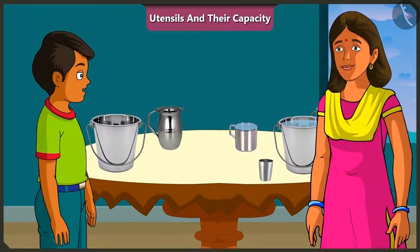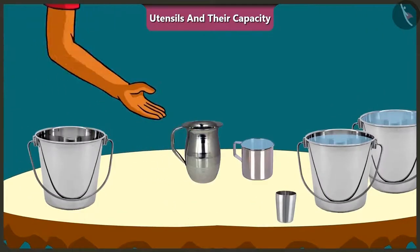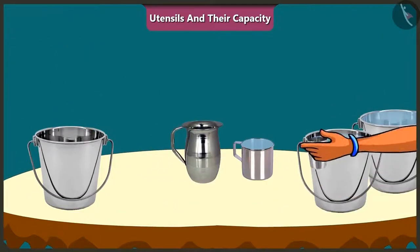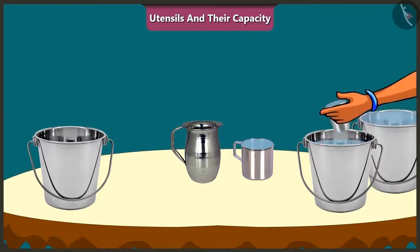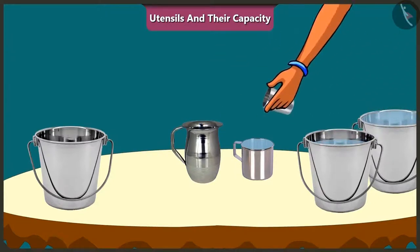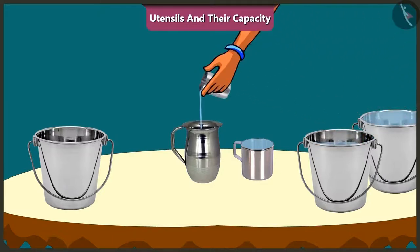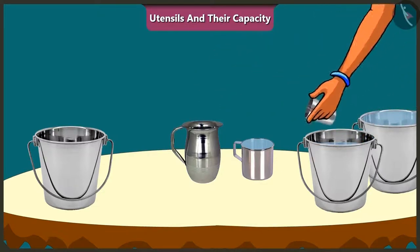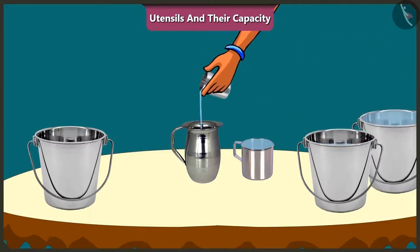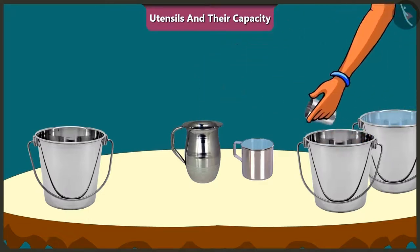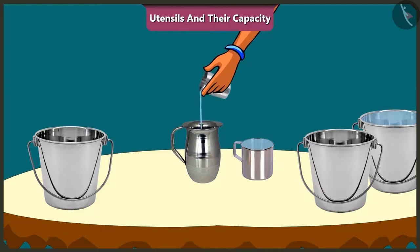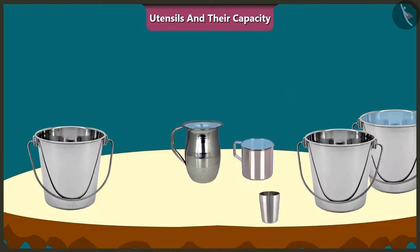Now, with the help of the same glass, we will fill this jug with water. One, two, three, four, five, and six — the jug is completely filled. So the capacity of this jug is equal to six glasses of water.